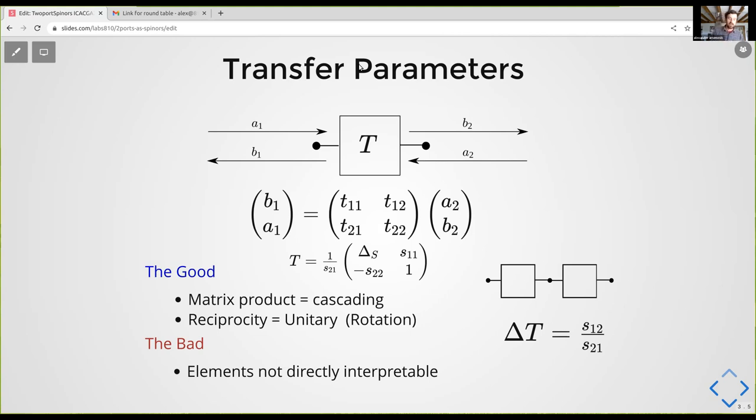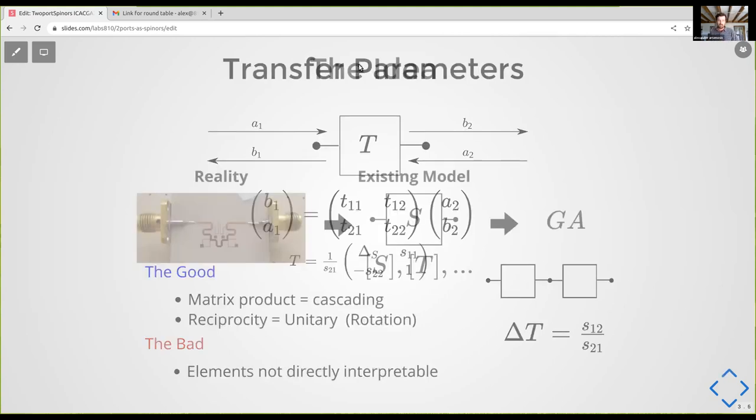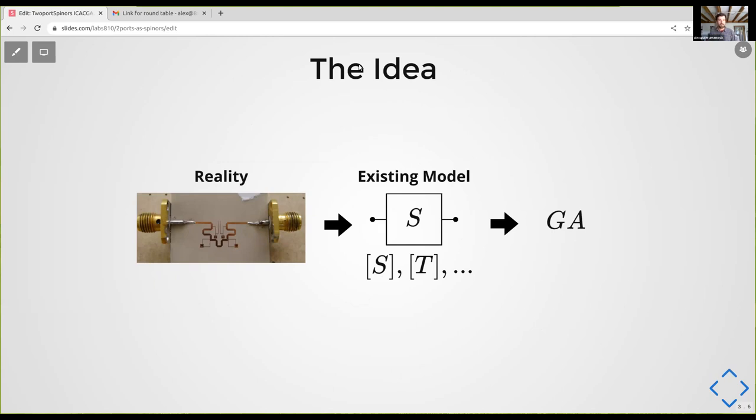The bad is that the elements now of this matrix are not interpretable. And the bad thing about this and the scattering representation are that they're matrices, right? And so we all know those have problems. And so we want to solve this problem with geometric algebra.